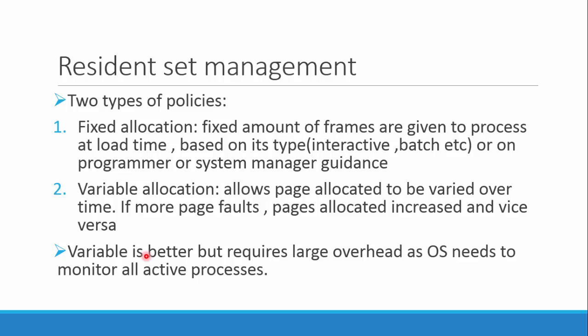There are two types of policies for resident set management. The first is fixed allocation, where a fixed number of frames are given to a process. These can be assigned at load time considering the type of process — whether batch or interactive — or based on whatever the OS decides is suitable, such as system manager or programmer preference.